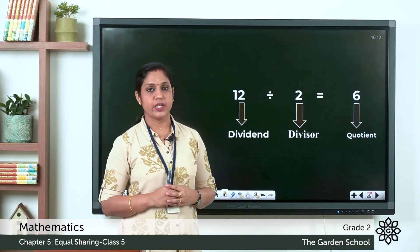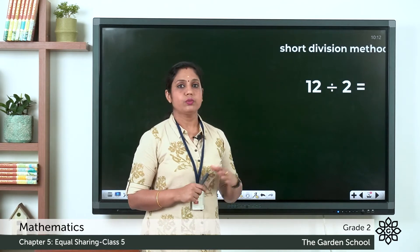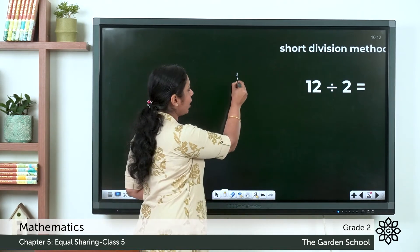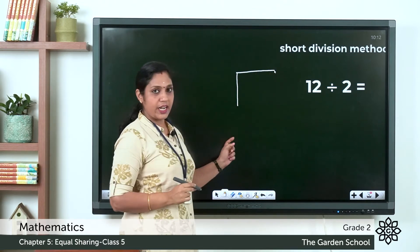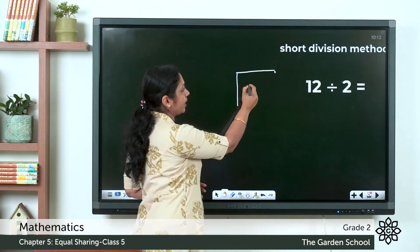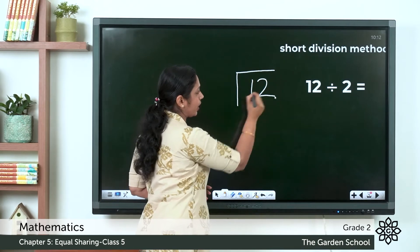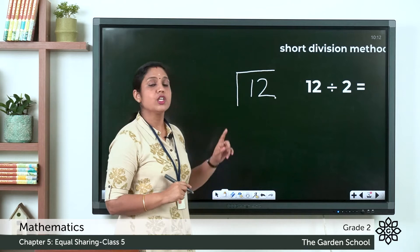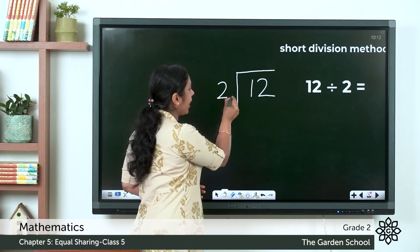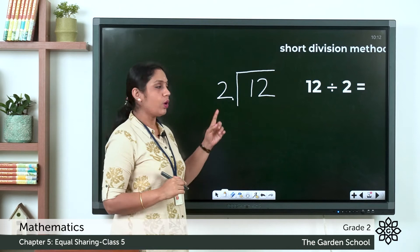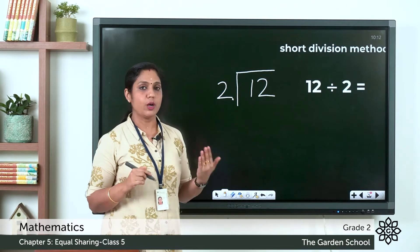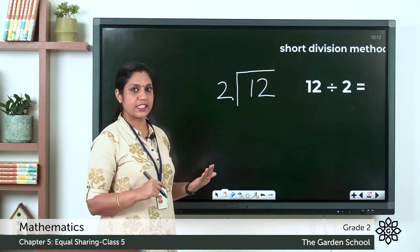Let's do 12 divided by 2 in the short division method. For that, draw one horizontal line and one vertical line. Write the dividend 12 inside this line, and the divisor 2 outside the line. Now we have to divide. Check the multiplication table of 2 — we saw that 2 into 6 equals 12, so the answer is 6.